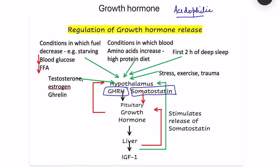The hypothalamus is the master integrator, detecting various stimuli that regulate growth hormone release. Major stimuli include conditions where fuel decreases — such as decreased blood glucose and decreased free fatty acids, as seen in the post-absorptive state or during starvation — causing increased GHRH release and elevated growth hormone.